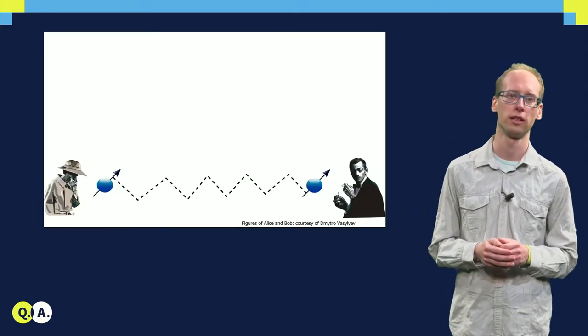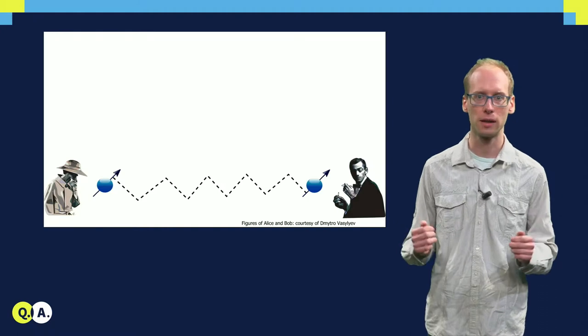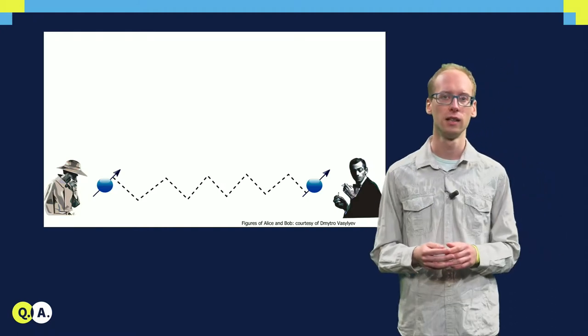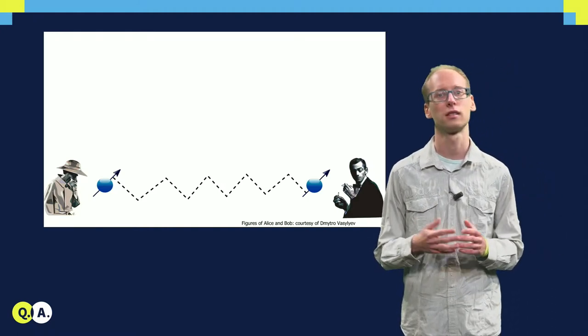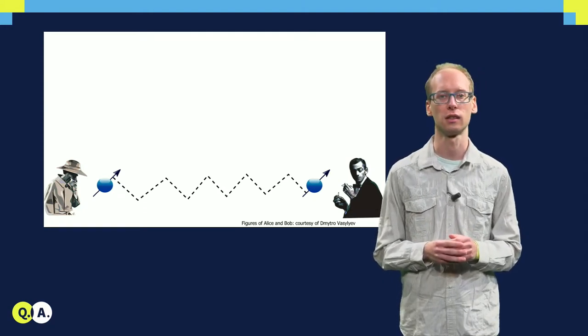We will start with a short motivation. Let us consider a scenario where Alice and Bob are separated by a long distance and they have access to certain experimental setups that allow them to generate long-distance entanglement.